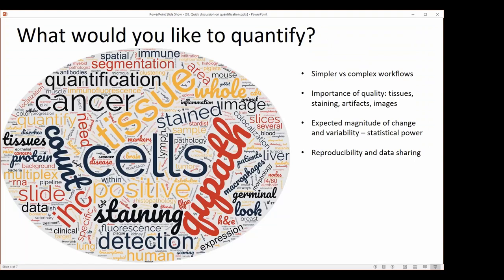This is a word cloud generated by various attendees at our workshop, and it goes to show how many different things people are interested in quantifying in a single image. This can range from very simple quantifications, where you have a single field of view and just want to count cells, all the way up to complex workflows where you find first the area of the tissue, then subtypes of areas like tumors or islets, and then various different classifications of cells, distances, and possibly neighborhood statistics.